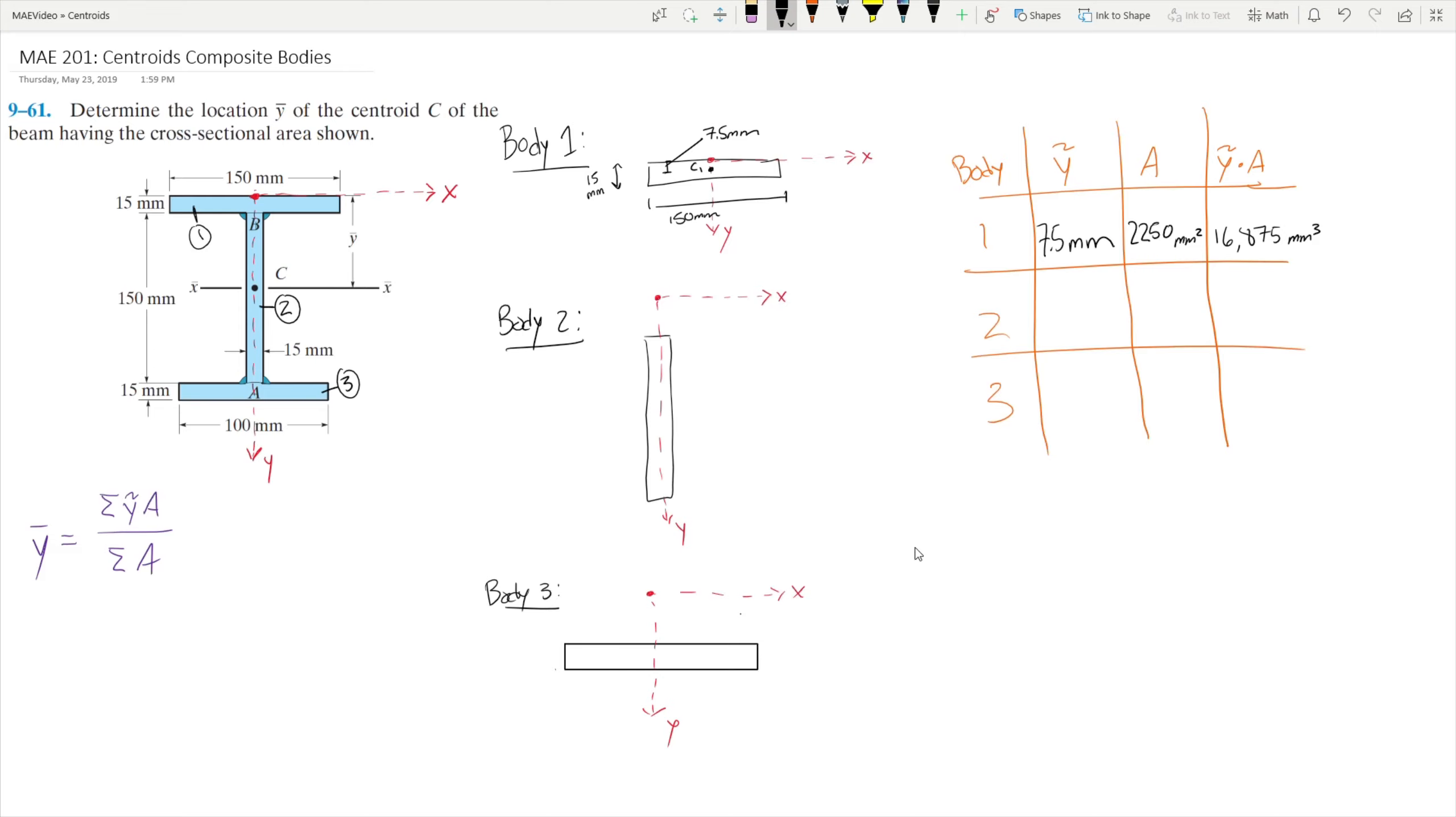Let's move on to body number 2 now. We'll follow the same process as before, only dealing with our y-tilde. We know the centroid is going to be half the height of the body. Since our body has a height of 150mm, the centroid will be 75mm from the top of the body.